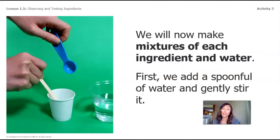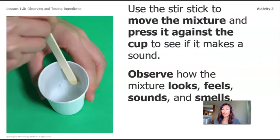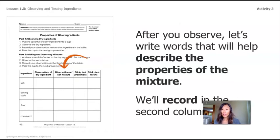We will now make mixtures of each ingredient and water. We're going to add a spoonful of water and gently stir it. We're going to use a stir stick to move the mixture and press it against the cup to see if it makes a sound. We'll observe how the mixture looks, feels, smells, and sounds. After we observe, let's write words to describe the properties of the mixture and record it in the second column titled 'observations of wet mixture.'